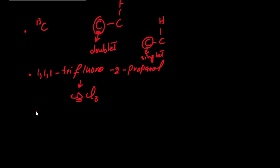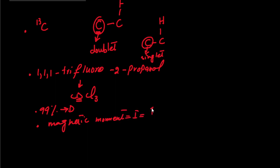CDCl3 is our solvent. It contains 99% deuterium. Deuterium is NMR active and its magnetic moment I is equal to 1. When we discuss the multiplicity of deuterium, we count the number of neighboring nuclei and use the formula 2NI + 1 to check the multiplicity.